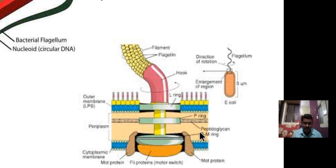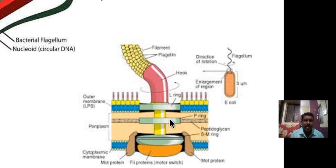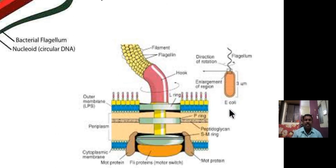In detail, the single flagellum shows two types of rings: the P ring and S ring. The hook and proteins extend from the flagellum. This structure facilitates the movement of flagella, which enables bacteria to travel.